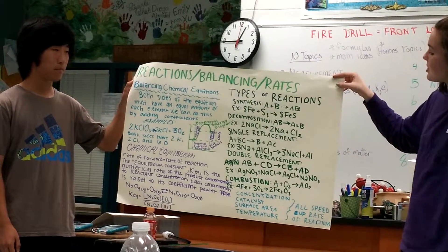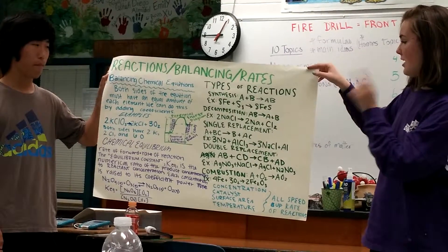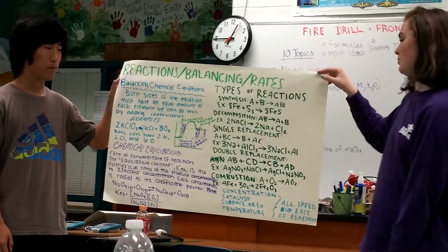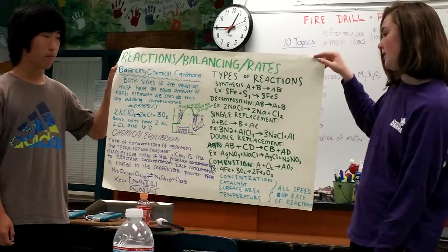And then decomposition is when you're breaking apart two things, which is AB is A plus B. And an example of that is 2 NaCl is 2 Na plus Cl2.